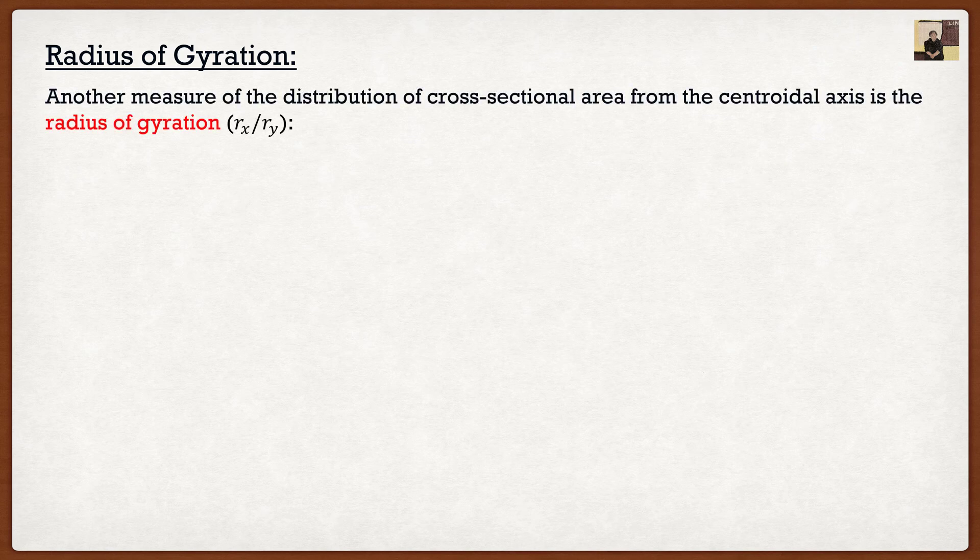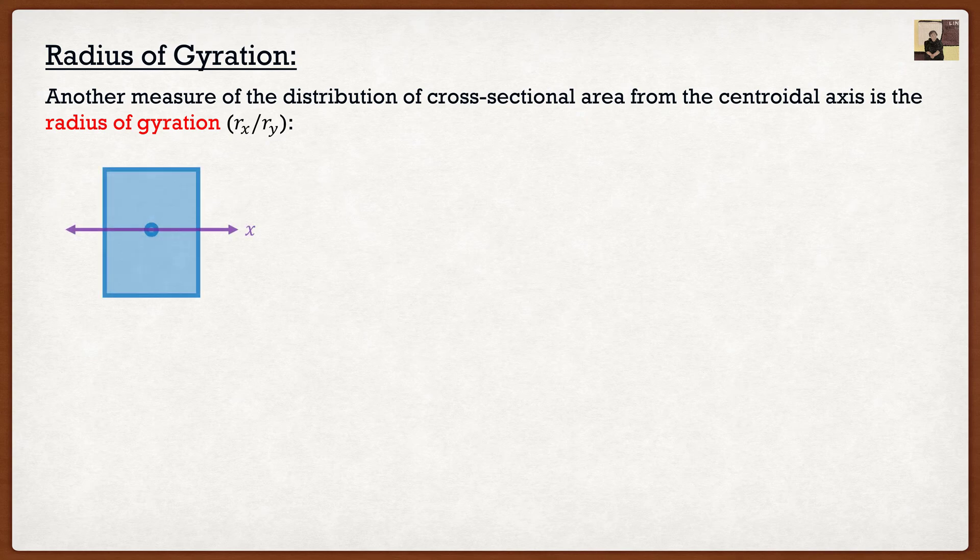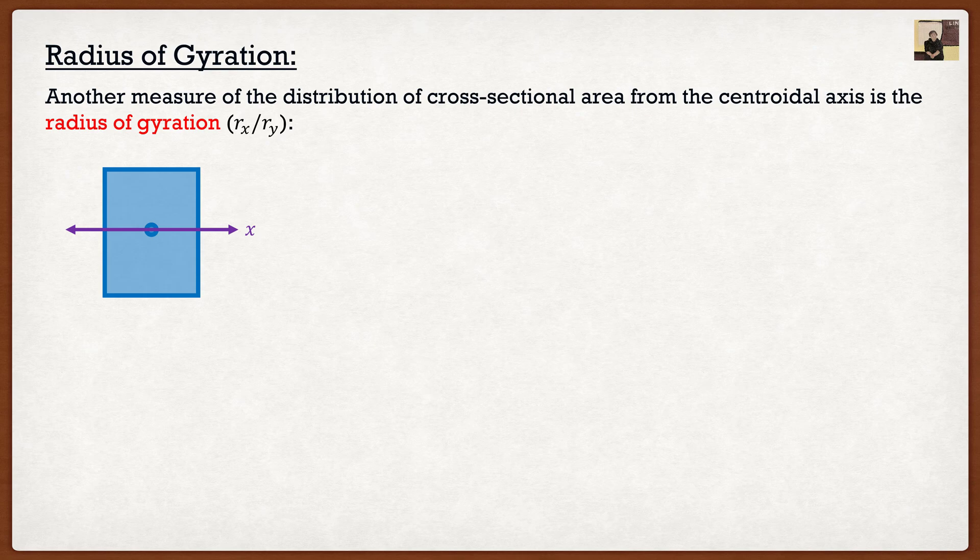So basically the radius of gyration is a measure of the distribution of cross-sectional area from the centroidal axes. Well the best way to describe it is to show you an example. Let's say that we had a rectangle and we wanted to find the moments of inertia about the centroidal axes in the x direction, it was just base times height cubed divided by 12.